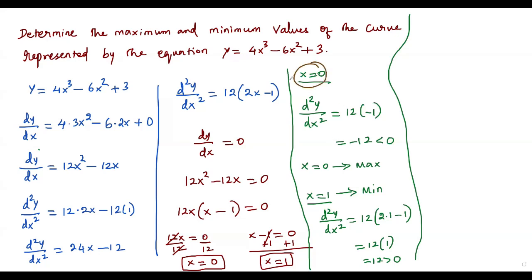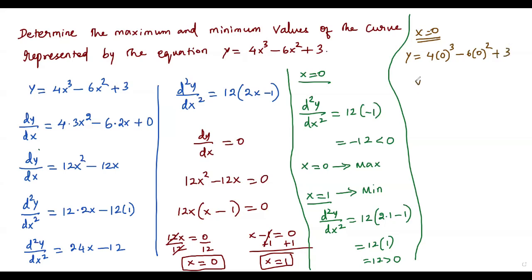To find the maximum value, we plug x equals 0 into the original function: y equals 4 times 0³ minus 6 times 0² plus 3. Zero cubed is zero, zero squared is zero, so y equals 0 minus 0 plus 3, giving y equals 3. The maximum value of the function is 3.